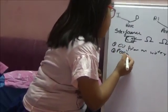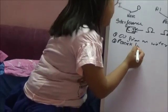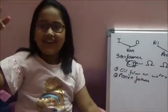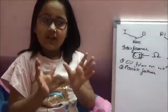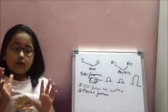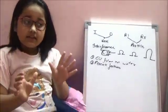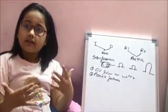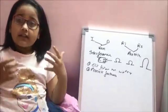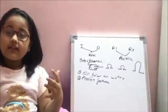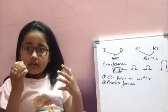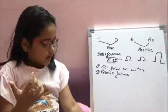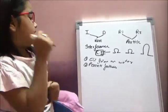Peacock feathers are another example. Have you ever observed peacock feathers? It is a multi-layered structure. The reflected light from this multi-layered structure causes constructive interference for certain colors like green and blue. Please note that if the same feather is seen from different angles, a slight change in the color pattern is observed. And that brings our discussion of interference to an end.